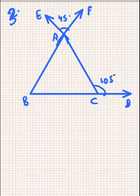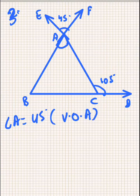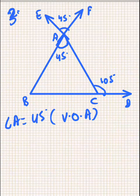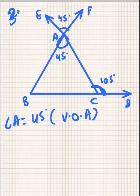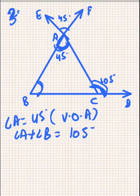Now in question number 3, we are given a figure and we have to find all the angles of triangle ABC. The first step is to find angle A. Angle A will be equal to 45 degrees because these are vertically opposite angles. Now we can use the theorem that the exterior angle of a triangle is equal to the sum of the two interior opposite angles. So this is an exterior angle on line BD, and angle A plus angle B will be equal to this exterior angle.